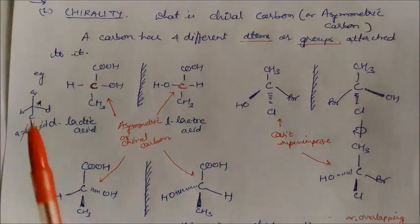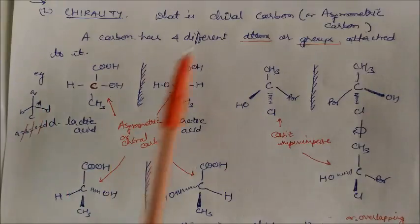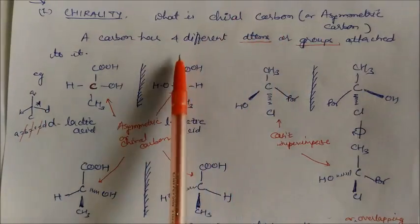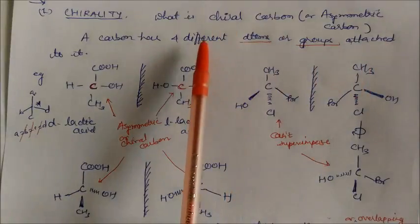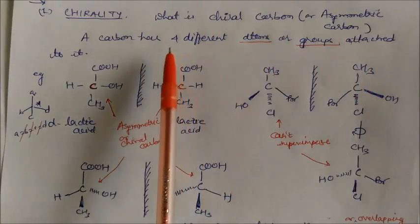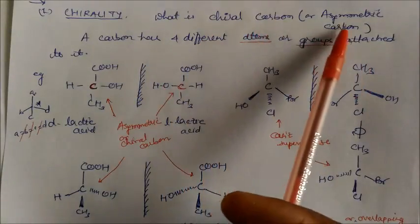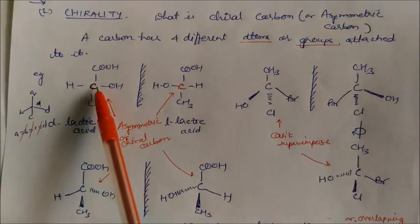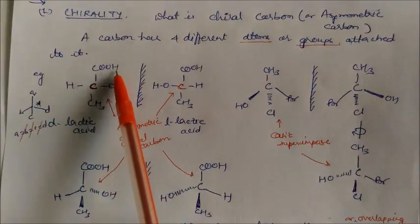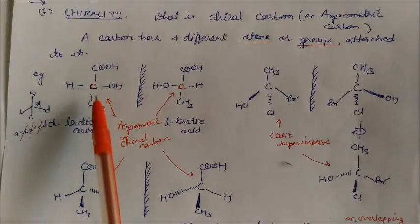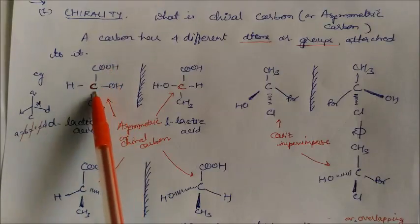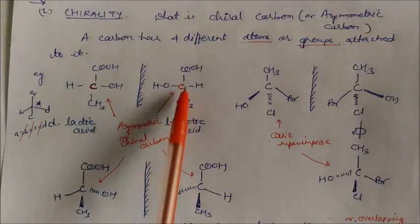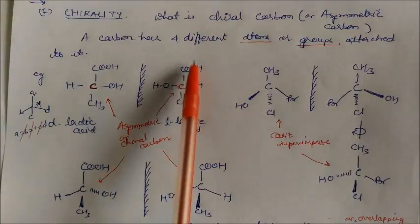What is chiral carbon? A chiral carbon is a carbon which has four different atoms or groups attached to it. This carbon is also called an asymmetric carbon. Let's see one example — this carbon has four different groups: one hydrogen, OH, CH3, and COH. So this carbon is called the chiral carbon.